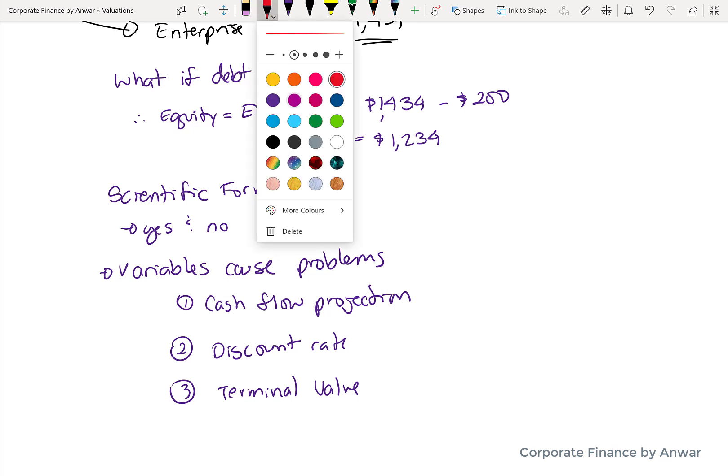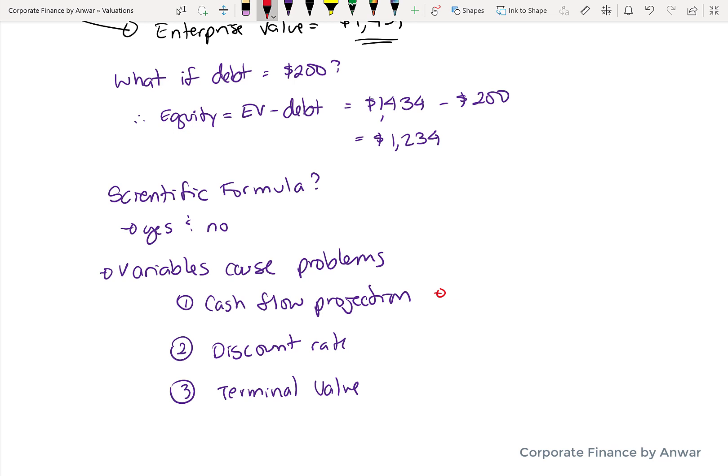Remember, we estimated five years of cash flows. And then beyond five years, it was what would happen if it continued forever after that.